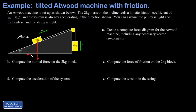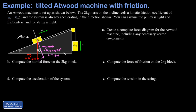Gravity pulls straight down on the two kilogram block. The magnitude mg is two times 9.8, which is 19.6 newtons. We decompose that into parallel and perpendicular components. The angle of incline equals the angle between the weight vector and the perpendicular to the ramp — 25 degrees. The perpendicular component is mg cosine theta: 19.6 cosine 25° = 17.8 newtons.